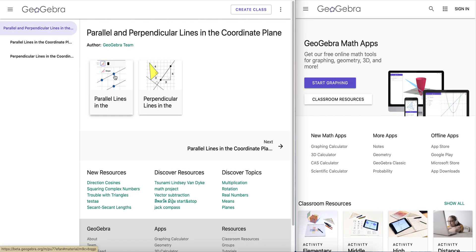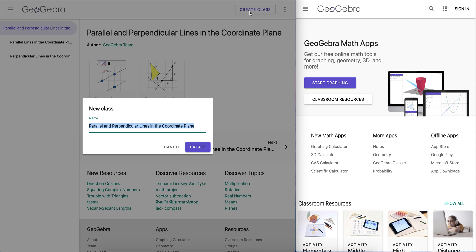So, as an overview, three student tasks from this activity, six student tasks from this activity will result in a GeoGebra class containing nine tasks for students to complete.